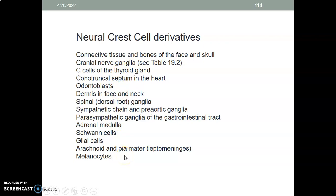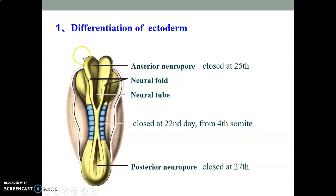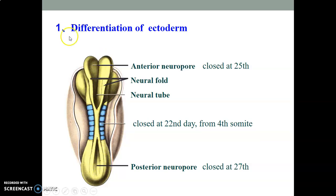The neural folds fuse to form a neural tube — one cylindrical tube. The superior two-thirds of this tube will form the brain and the inferior third will form the spinal cord. At the superior (cephalic) end and the caudal end, we have neural pores. This tube closes like a zip from the center, moving upward and downward, with the cranial pole closing earlier at day 25.